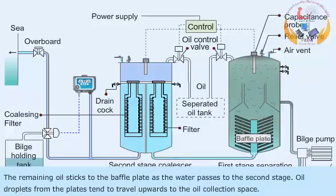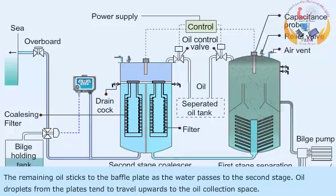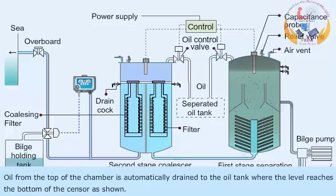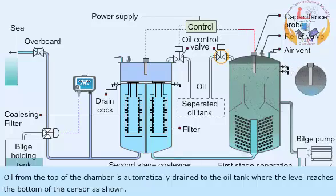The remaining oil sticks to the baffle plates as the water passes to the second stage. Oil droplets from the plates tend to travel upwards to the oil collection space. Oil from the top of the chamber is automatically drained to the oil tank when the level reaches the bottom of the sensor.